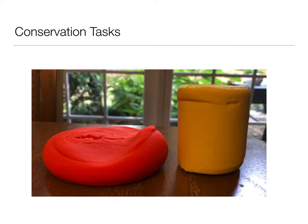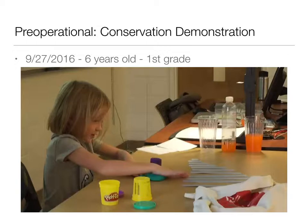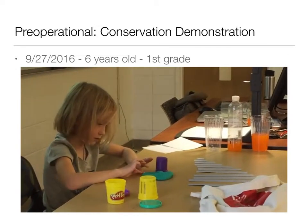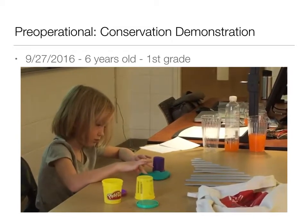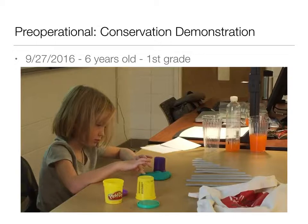Here are some videos of my daughter doing conservation tasks. The first is when she was six years old at the beginning of first grade. She was asked if the two playdoughs were the same, then one was smashed flat. She said the flat one now has more — so even though they were initially the same size, once one was smashed down she said the green one was bigger because it was flatter. She was not able to pass the conservation task, which was appropriate — she was at the end of the pre-operational stage.